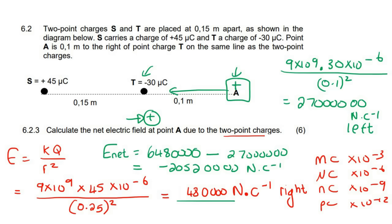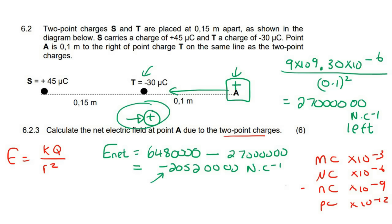So now we have to fix this up a little bit. So all that we do now is we chose right as positive, but we got a negative answer. So it means, therefore, your net electric field is going to be 2,052,000 N·C to the left, because we chose right as positive, but then our answer was negative. So you just switch it around in the last step.